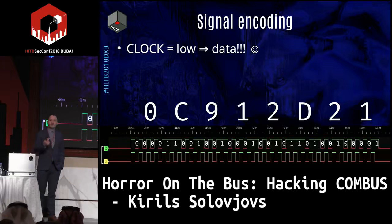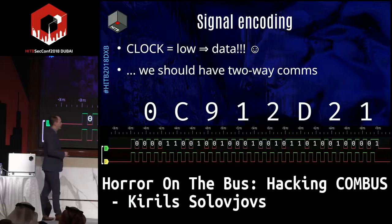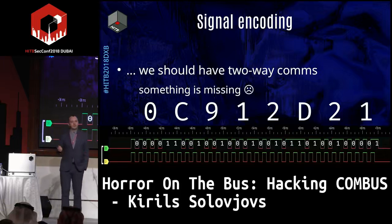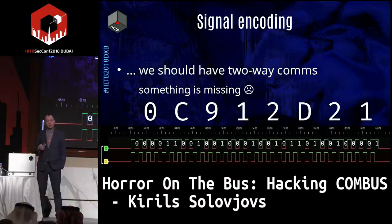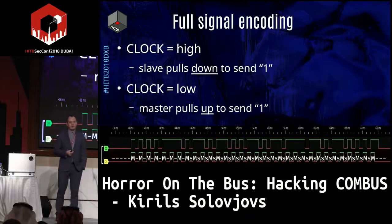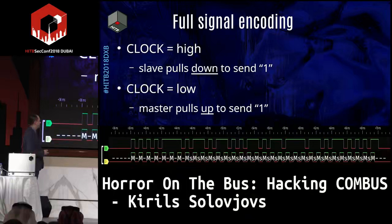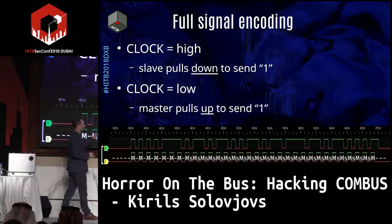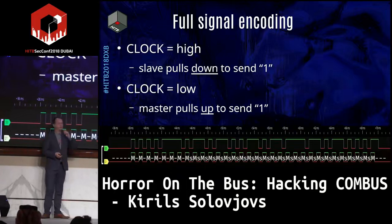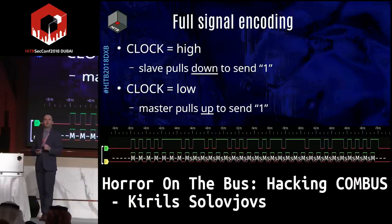Doing some more research, we can conclude that the clock actually indicates which side of the communications is talking. What we identified previously was the master talking. When the clock — the yellow one — is high, the master is sending data. When the clock is low, the slave is sending data. So it's a two-way communication channel where each bit goes from a different side.